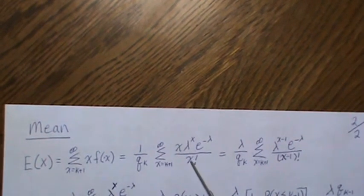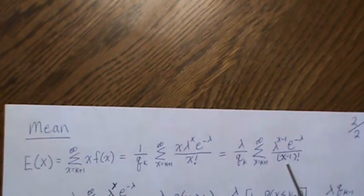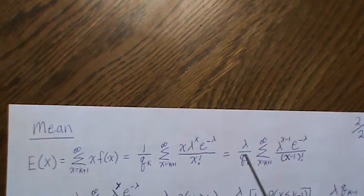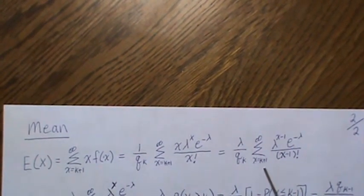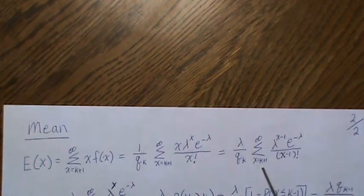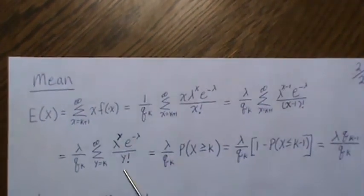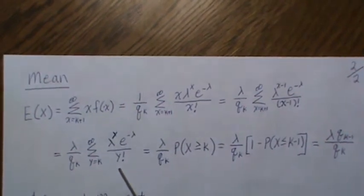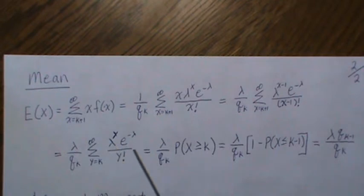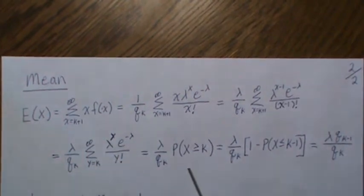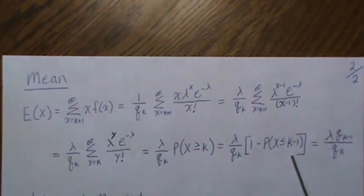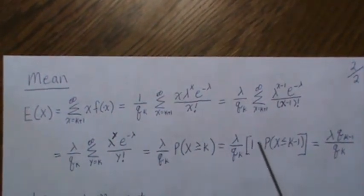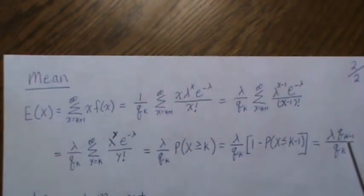The x cancels with one of the factorial terms leaving x minus 1 factorial, and we factor out a lambda to get an x minus 1 in both places. With the index change y = x minus 1, we sum from k to infinity — this is the Poisson distribution — so it equals P(x greater than or equal to k), which is 1 minus P(x less than or equal to k minus 1), which we call q sub k minus 1.